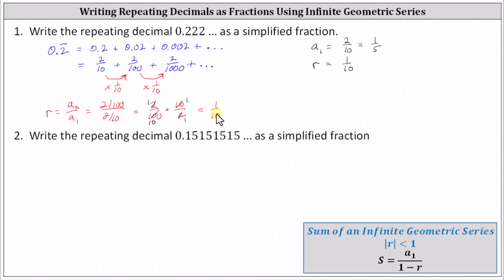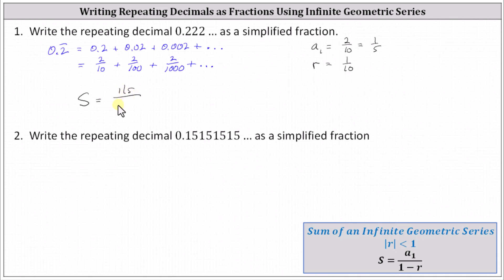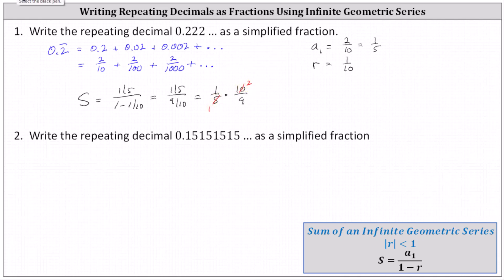Because the absolute value of R is less than one, we can now determine the sum of the infinite geometric series, which will give us a simplified fraction for the repeating decimal. The infinite sum is equal to A sub one — which I'll write as one fifth instead of two tenths — divided by one minus R, or one minus one tenth. One minus one tenth is nine tenths, giving us one fifth divided by nine tenths, which is equivalent to one fifth times the reciprocal of nine tenths, which is ten ninths. Simplifying before multiplying, five and ten share a common factor of five: one five in five, two fives in ten. The product is two ninths. Because the infinite sum is two ninths, we know the repeating decimal zero point two repeating equals the simplified fraction two ninths.